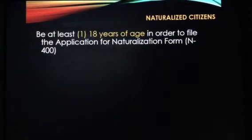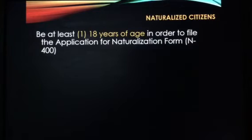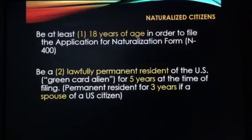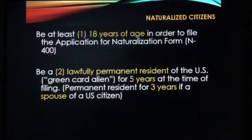First, you have to be at least 18 years of age. Any person naturalized whose children are under 18 — those children automatically gain citizenship too. But once you turn 18, you have to file for naturalization yourself. Second, you have to be a lawfully permanent resident of the United States — in other words, a green card alien, a legal permanent resident — and you must have held that status for at least five years at the time of filing.